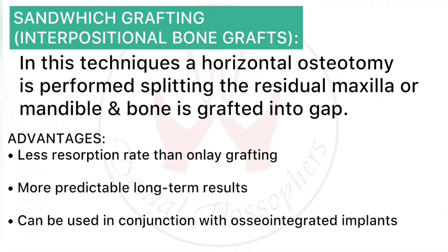Intrapositional bone graft — also called sandwich grafting — is a technique in which a horizontal osteotomy is performed, splitting the residual maxillary or mandibular bone. The gap created after osteotomy is filled with bone graft material. Advantages include a lower resorption rate than only bone grafting, more predictable long-term results, and suitability for use in conjunction with osseointegrated implants.